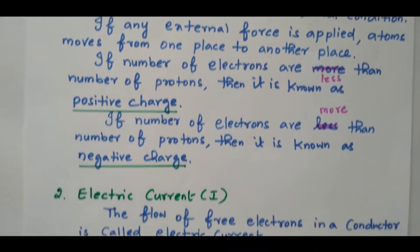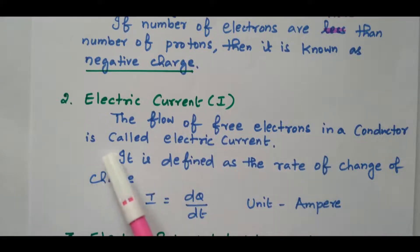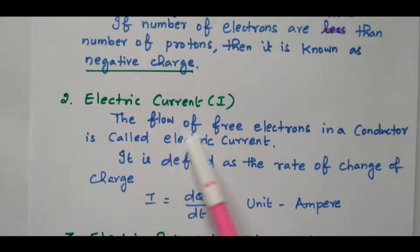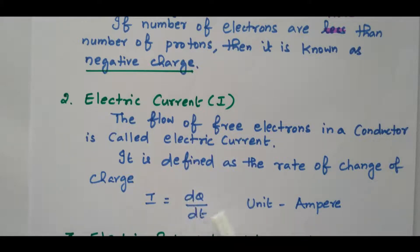Next we will see the electric current. Any external force applied causes the electrons to move — atoms are moving from one place to another place. The flow of free electrons in a conductor is called the electric current. The symbol is I. It is defined as rate of change of charge: I equals dq divided by dt. The unit is ampere.